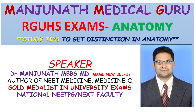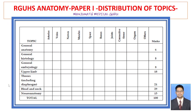Hello everyone, welcome to MMG. We are going to discuss the RGHS exam, especially anatomy — specifically the study tips to get distinction in anatomy. As you know, there are two papers: anatomy paper 1 and paper 2.